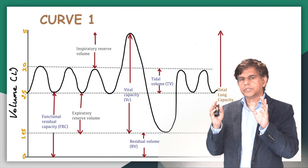The next important curve is the flow-volume curve. Volume is on the x-axis and flow is on the y-axis. You ask the patient to take a deep breath — inspiration is at the bottom of the curve. Then they come to the top, which is expiration, and blow it out, and the curve comes back to meet itself.